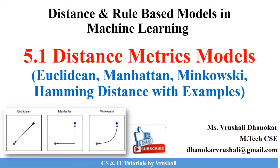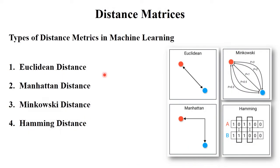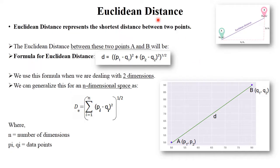In this session I am going to present the next topic, that is distance matrix models. In machine learning there are four types of distance matrix algorithms: the first one is Euclidean distance, second one is Manhattan distance, third one is Minkowski distance, and the last one is Hamming distance. We will discuss these four distance matrix models one by one with examples. The first one is Euclidean distance.